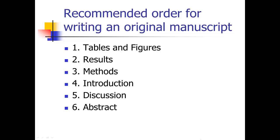Then the next thing I would do is write the introduction section. You could technically write it before these other sections, but what inevitably happens is you're telling a story with your data and tables and figures, and knowing what that story is helps you set up the introduction. So I write that fourth. Then I write the discussion section — that's of course the hardest to write because it involves the most writing and is the most complex. Finally, I leave the abstract for the very end. Don't bother writing your abstract before the other sections, because you're just pulling a little bit out of each of those sections, so it's much easier to write last.